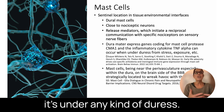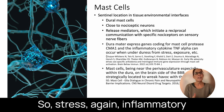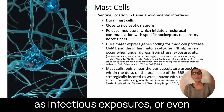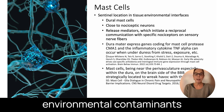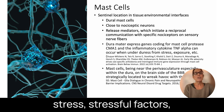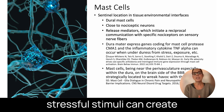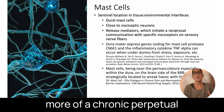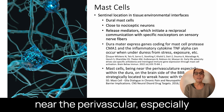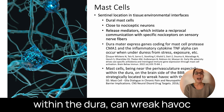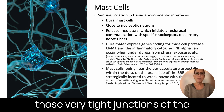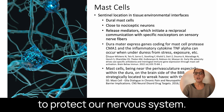Mast cell degranulation occurs under any kind of duress — stress, inflammatory responses from exposures, whether infectious or environmental contaminants or toxicants, even internal or external stressful stimuli — creating a chronic perpetual inflammatory response. Mast cells, being near the perivascular space, especially within the dura, can also wreak havoc on the blood-brain barrier, breaking down those very tight junctions that are meant to protect our nervous system.